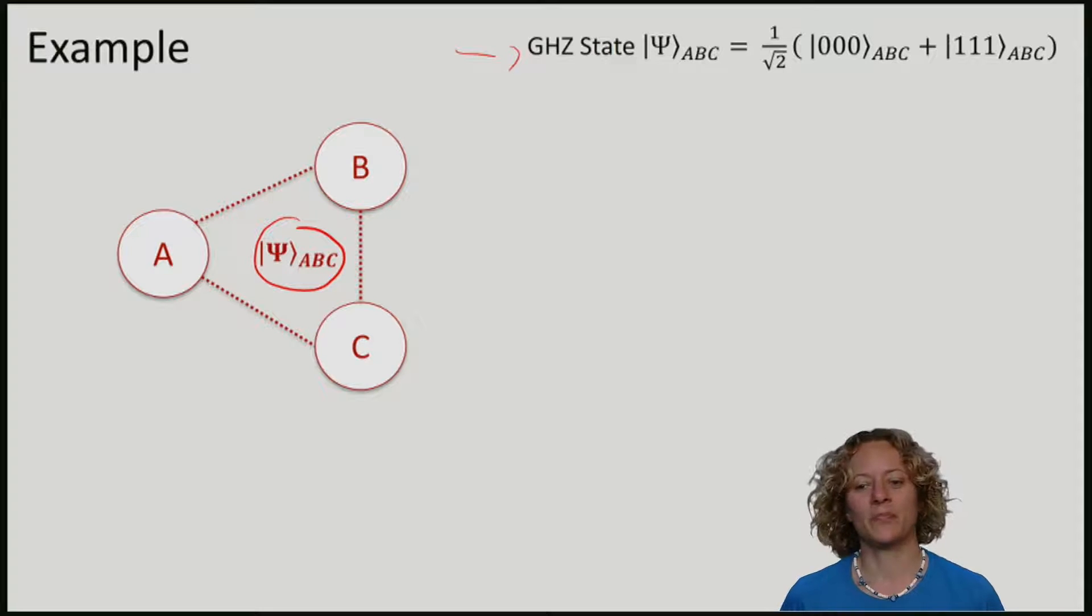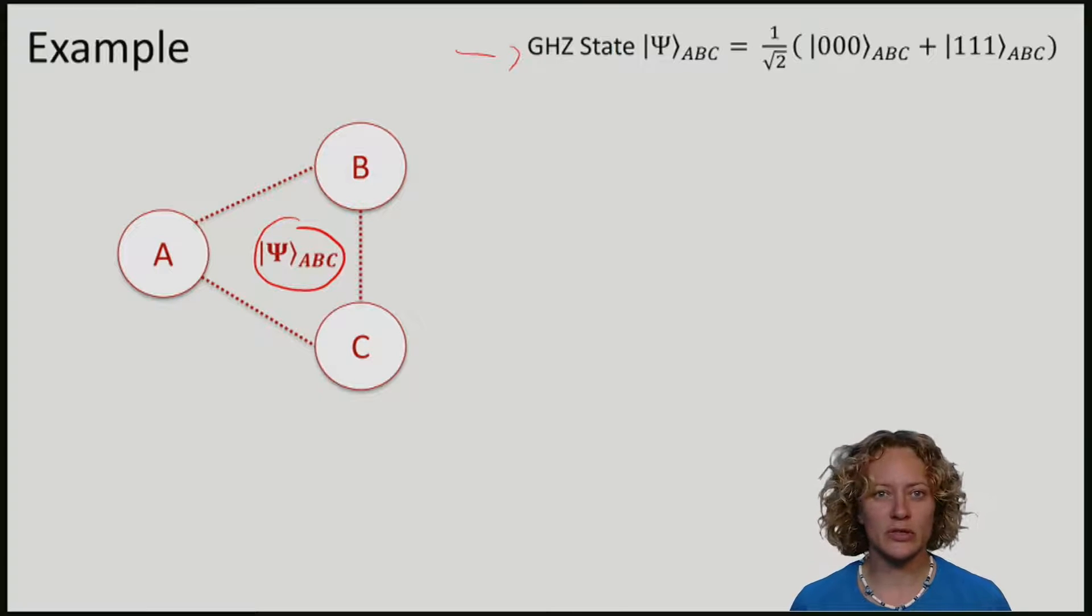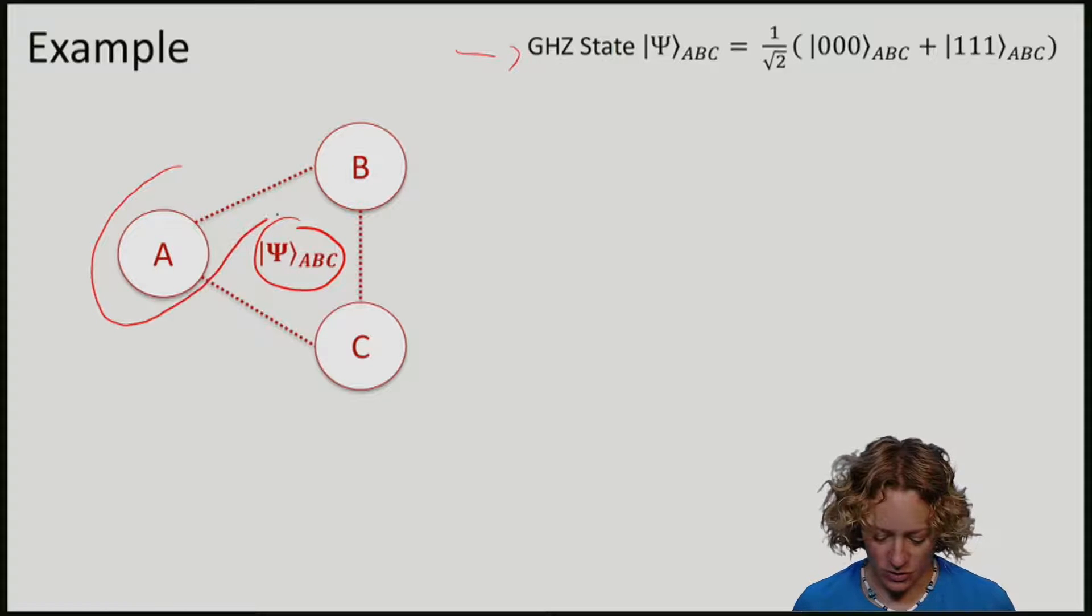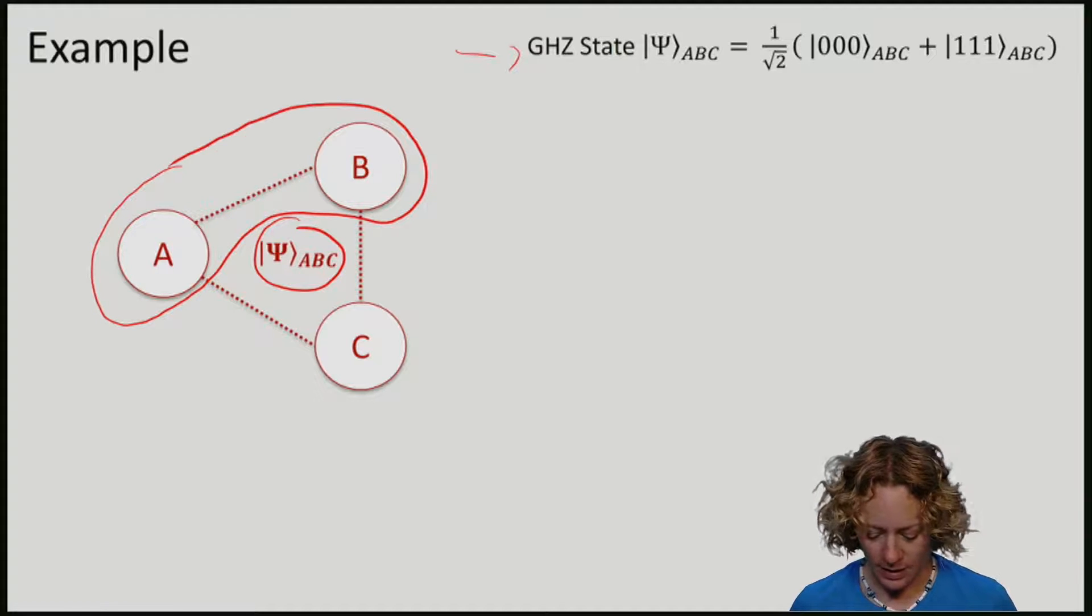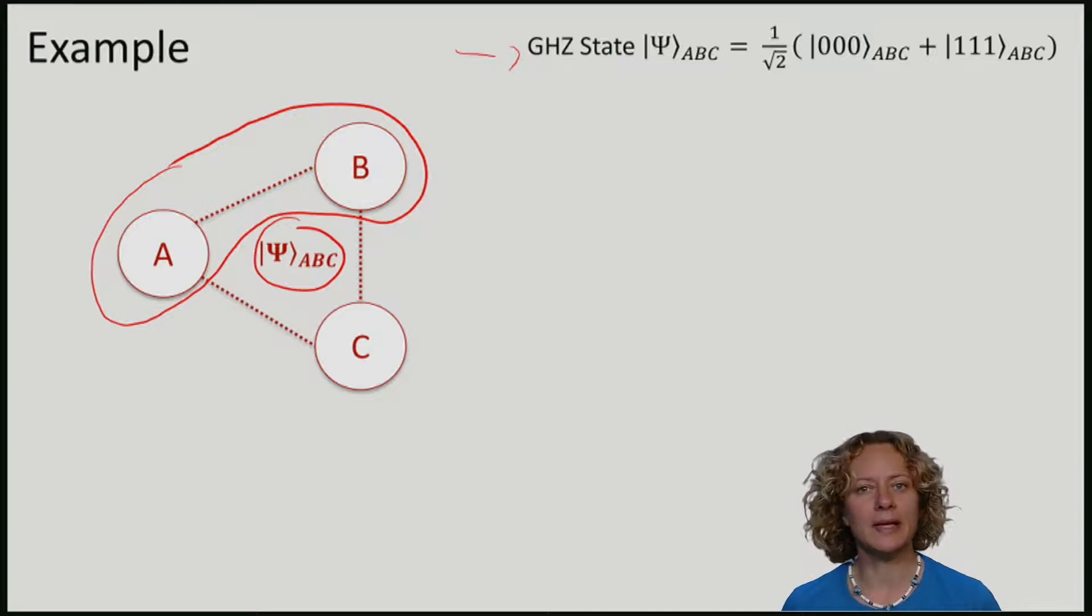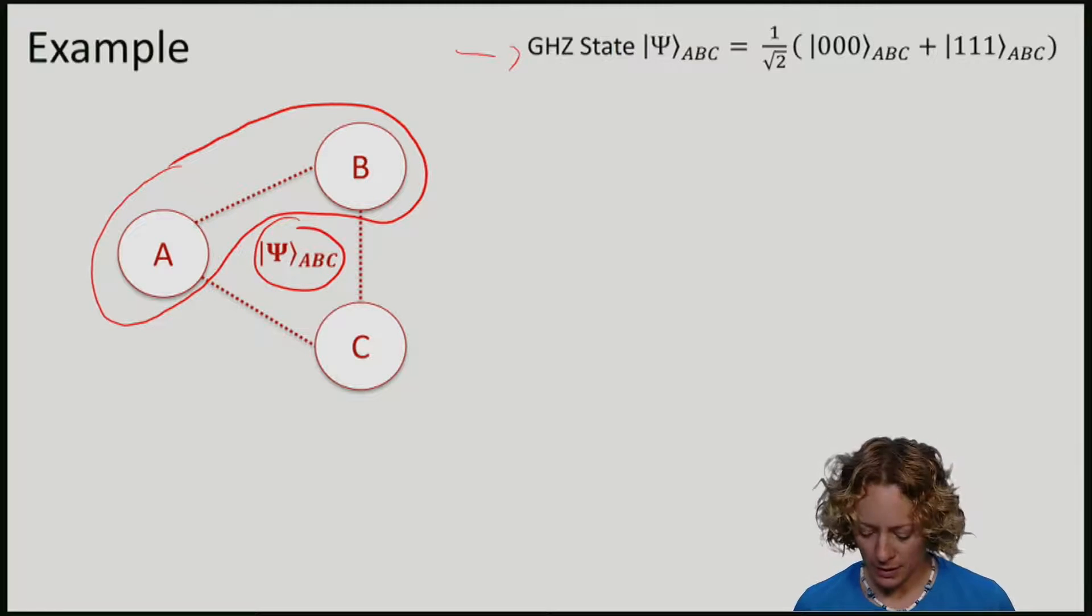We will now have a look at different parts of this state. The first thing we're going to do is look at what the reduced state on just rho AB looks like. So we're going to have a look at just the two qubits rho AB and ask, is rho AB entangled?